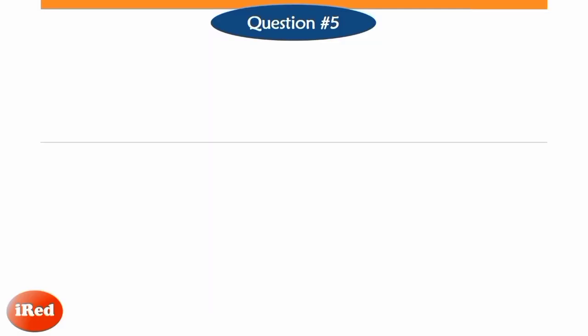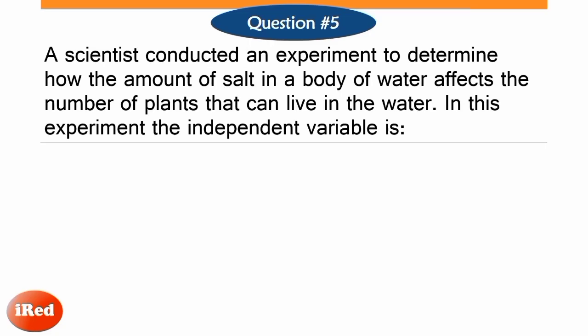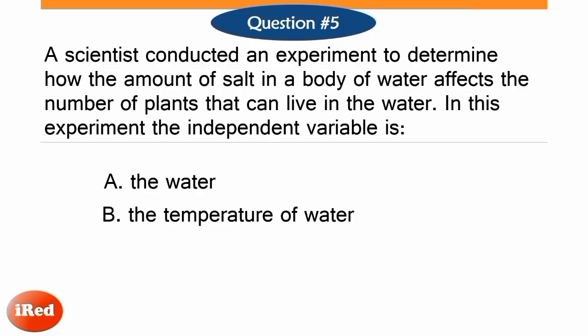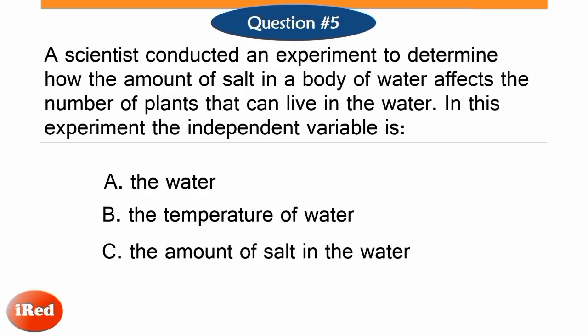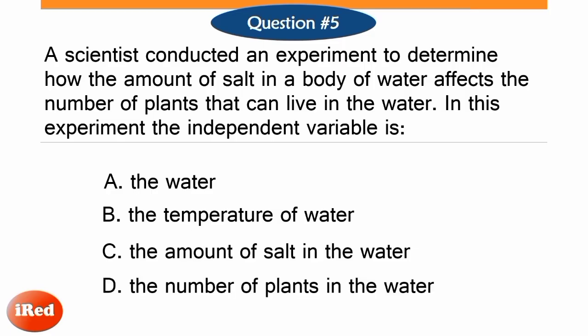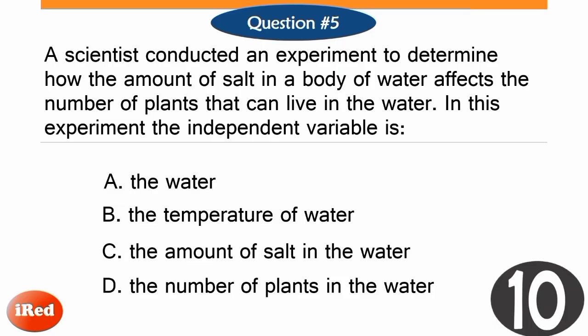Number 5. A scientist conducted an experiment to determine how the amount of salt in a body of water affects the number of plants that can live in the water. In this experiment, the independent variable is: letter A, the water; letter B, the temperature of water; letter C, the amount of salt in the water; or letter D, the number of plants in the water.